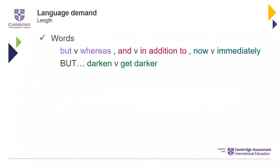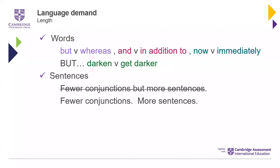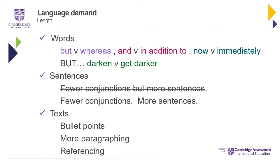We can summarise this thinking about words: generally, shorter words are easier to understand, but not always — remember 'darken' versus 'get darker'. Shorter sentences with fewer conjunctions are more supportive and easier for learners to understand. At whole-text level, content broken up with paragraphs and bullet points looks more accessible and is generally easier for learners to process. On referencing: the use of pronouns like 'it', 'them', 'there' can be very confusing for learners, and is worth thinking carefully about.